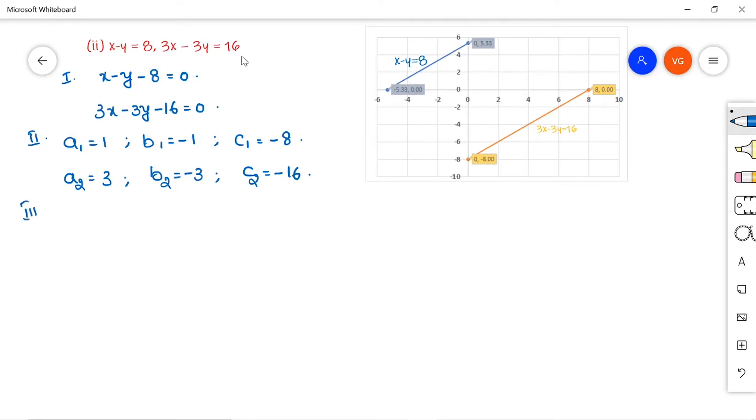Now compare the ratios. So a1 by a2 is equal to 1 by 3, b1 by b2 is equal to minus 1 divided by minus 3, that I am writing it as 1 by 3, and c1 by c2 is minus 8 by minus 16 which is nothing but 1 by 2.